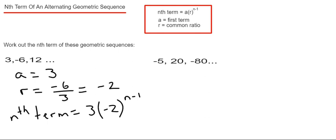Let's do example two. This time we've got minus 5, 20, and minus 80. Again, we just need our first term, which is 5, and then the common ratio. We just divide the second term by the first term.